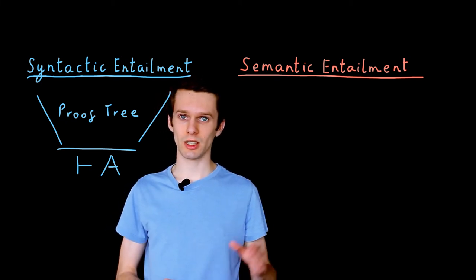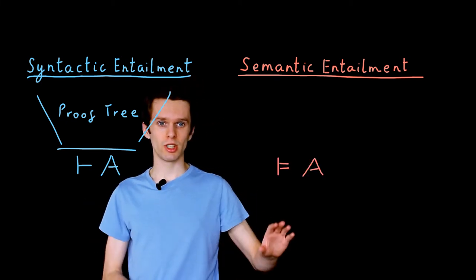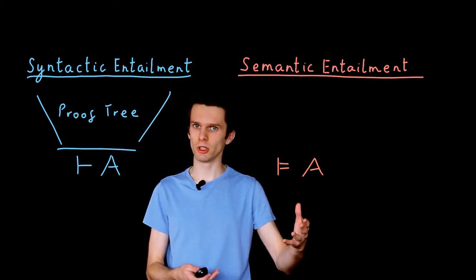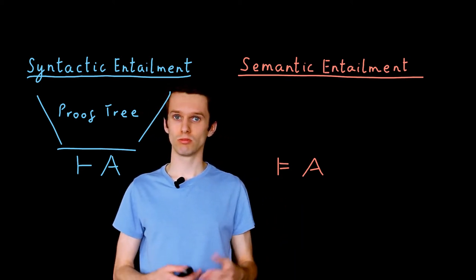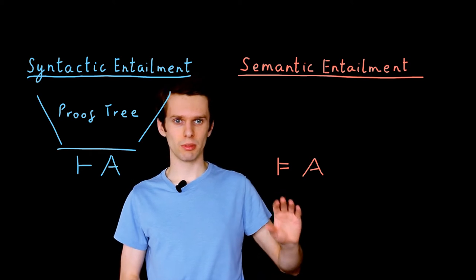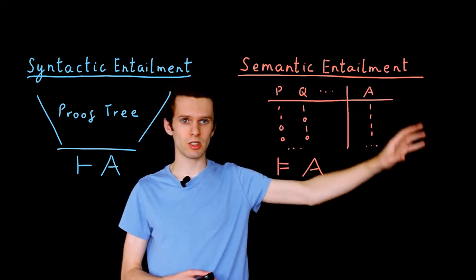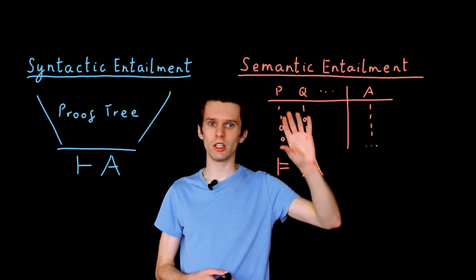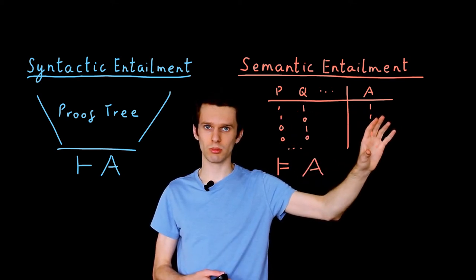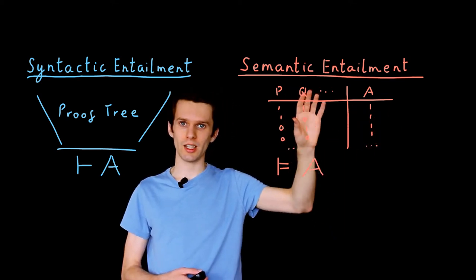This is written really similarly using another turnstile symbol, the double turnstile. And what does it mean? Well, if we have semantic entailment, it simply means that our proposition A is true in the semantics, is true under any interpretation.